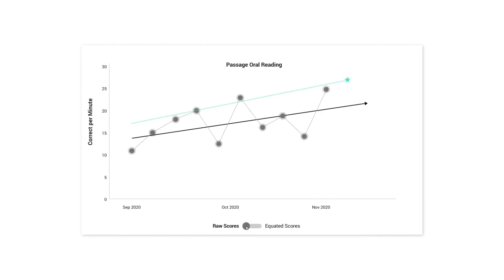Let's look at an example. Here is a graph of a child's performance over 10 weeks. These are unequated or raw scores. The scores go around an aim line — that thin black line that shows the progress that the child is making in summary form — but you can see that the individual data points vary quite a bit from the black line. There's a lot of bounce.